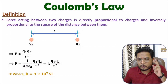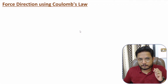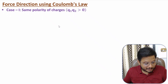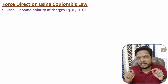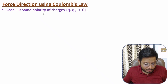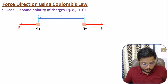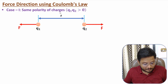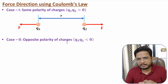Coulomb's law is used to identify the force acting between two charges. Now I'll explain the direction of force. In the first case, we consider same polarity of charges — both charges are positive or both are negative. If we have same polarity, then q1 × q2 is greater than zero, and there will be a repulsive force between the charges.